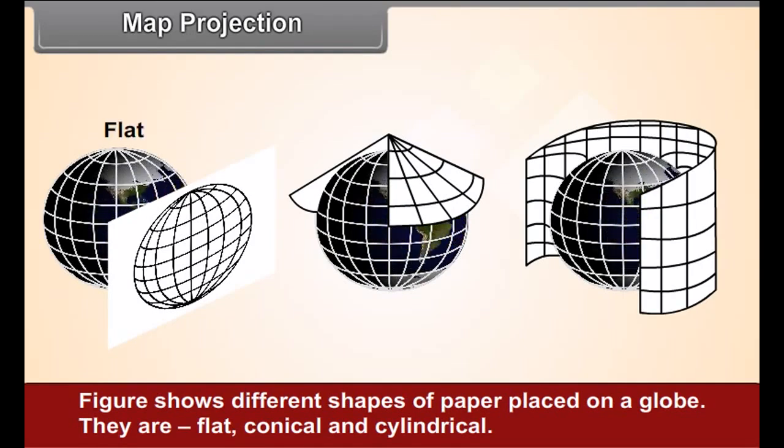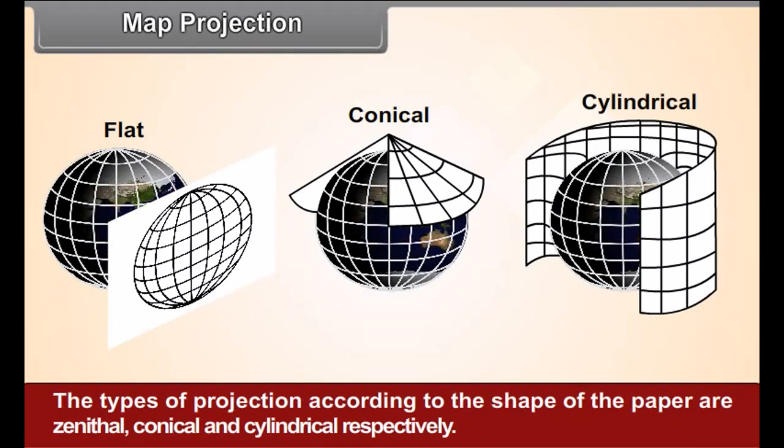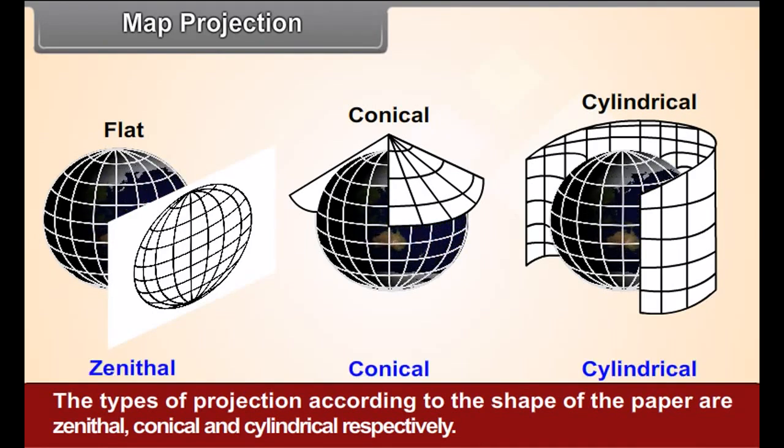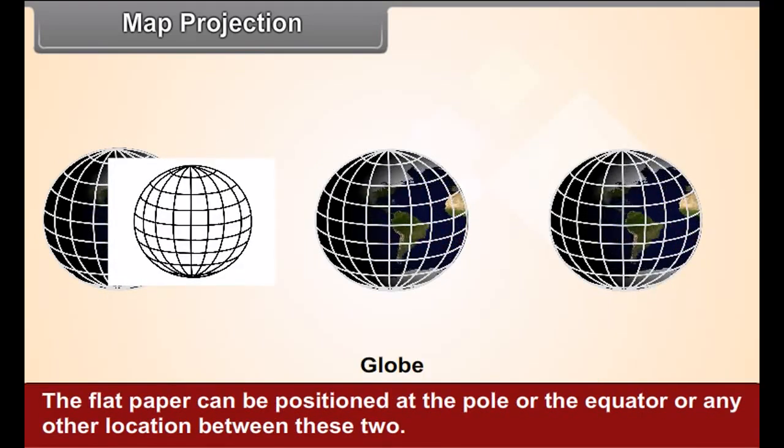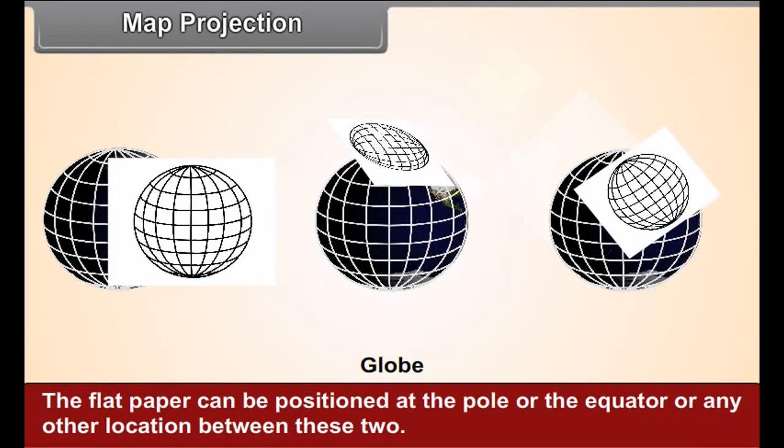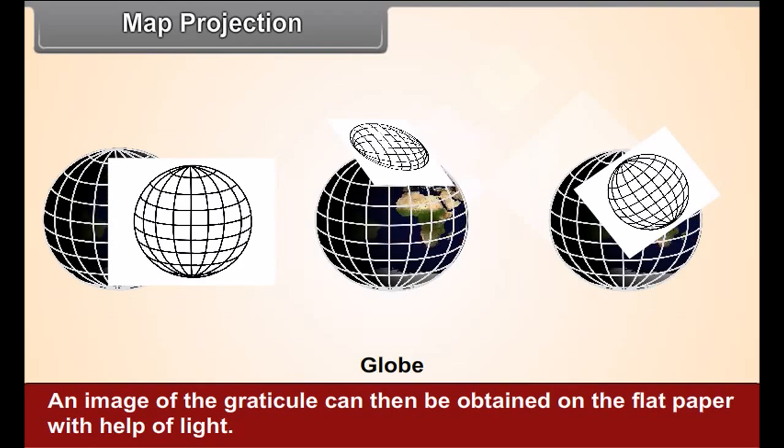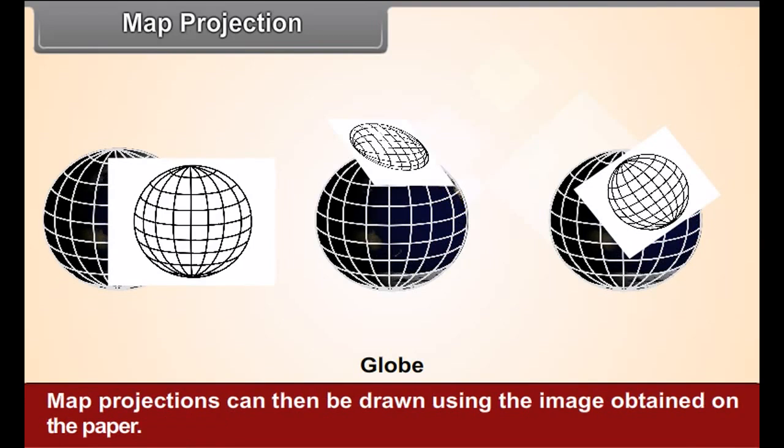They are flat, conical, and cylindrical. The types of projection according to the shape of the paper are zenithal, conical, and cylindrical respectively. The flat paper can be positioned at the pole or the equator or any other location between these two. An image of the graticule can then be obtained on the flat paper with the help of light. Map projections can then be drawn using the image obtained on the paper.